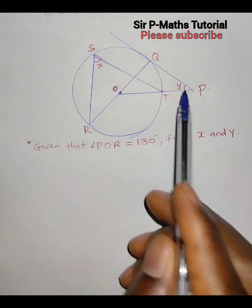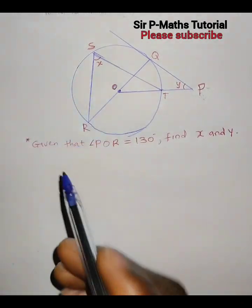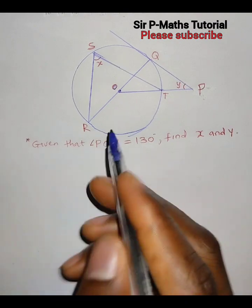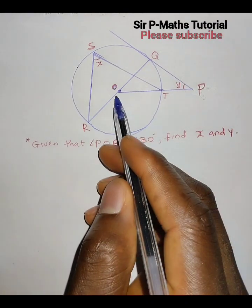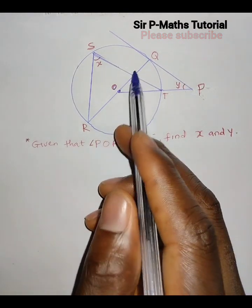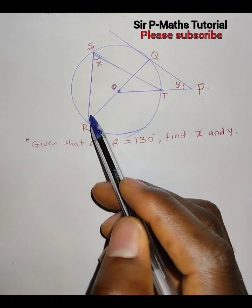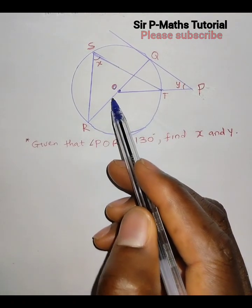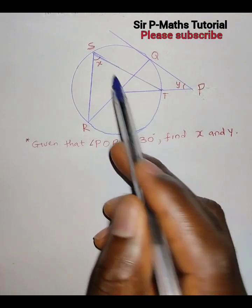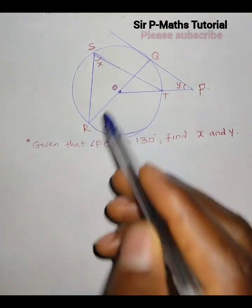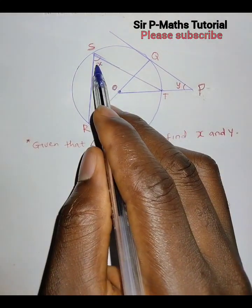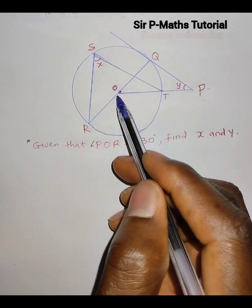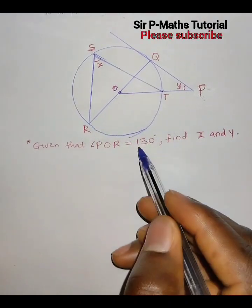Let's get X first. The first theorem we'll consider is that the angle at the center is twice the angle formed at any other point on the circumference of the circle. So if the angle at the center is 30, the angle at the circumference will be 15; if here is 40, here will be 80.